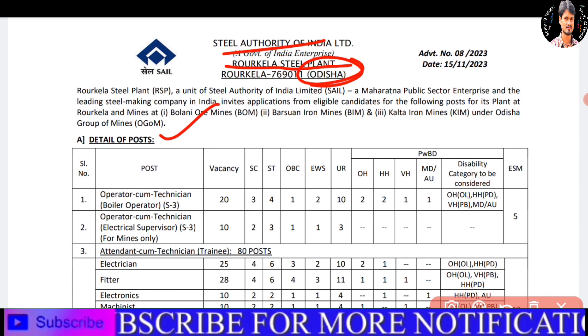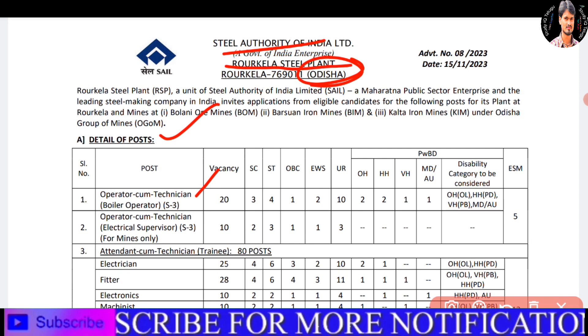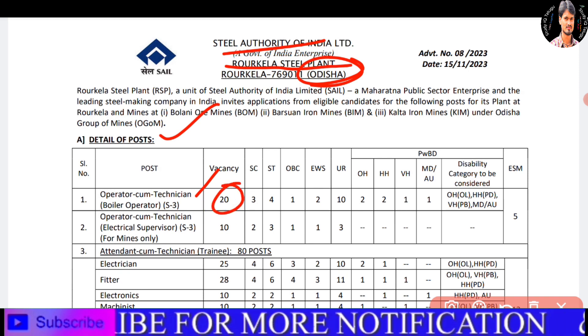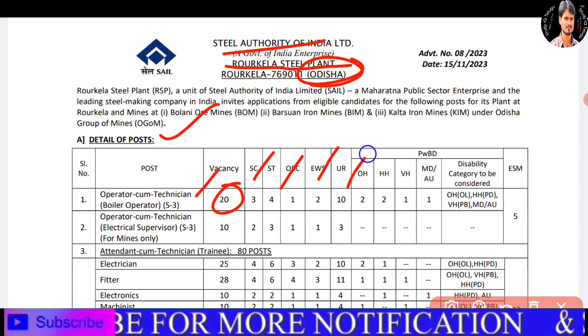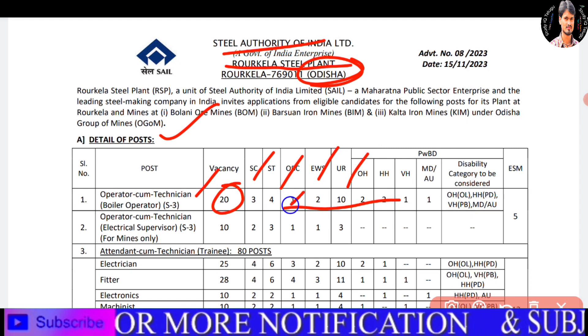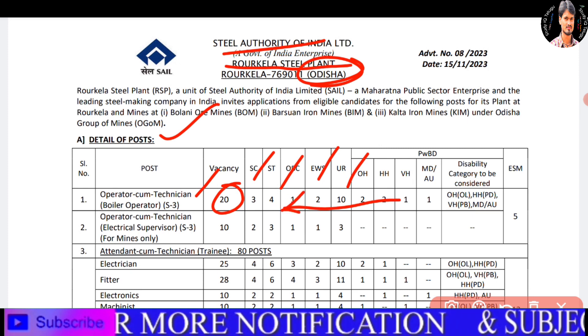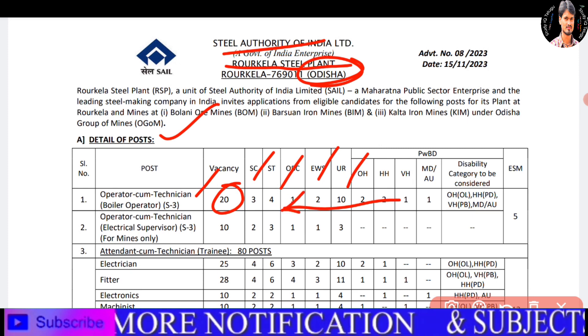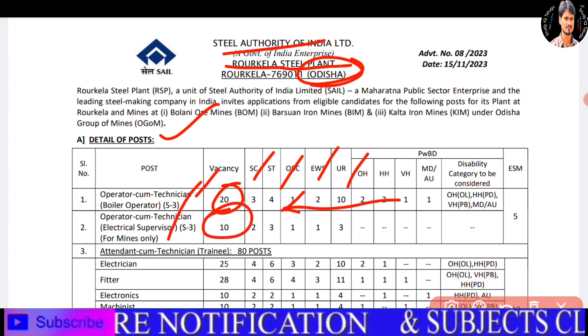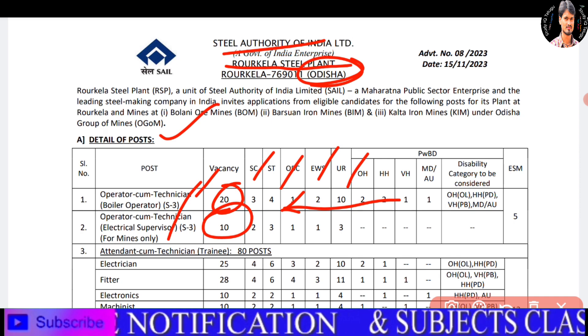Here, we will check the S3 operator, technician boiler, and vacancies — 21 in total. In the category-wise breakdown, we can check a total of 10 vacancies.